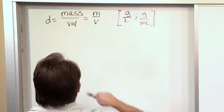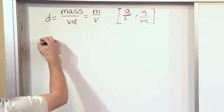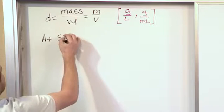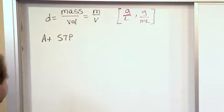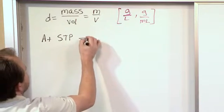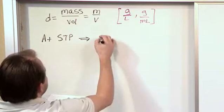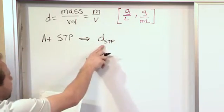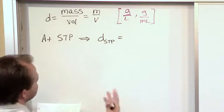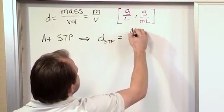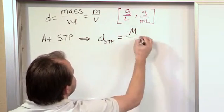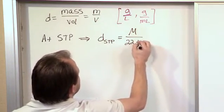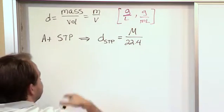Now, there's a special case that's a little easier to calculate than this. At STP, remember STP is Standard Temperature and Pressure, that's one atmosphere and zero degrees Celsius. At Standard Temperature and Pressure, if you have a gas at STP, the density of that gas is very interesting. You can simplify the calculation. You can take its molar mass and divide by 22.4 and that'll also give you the density.